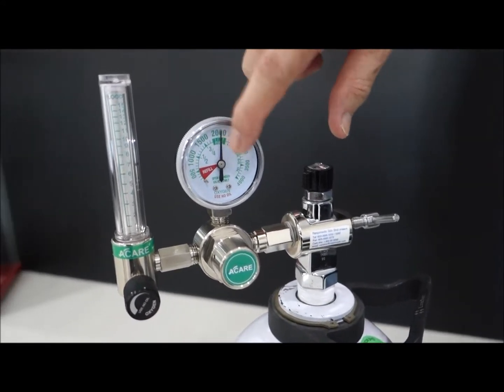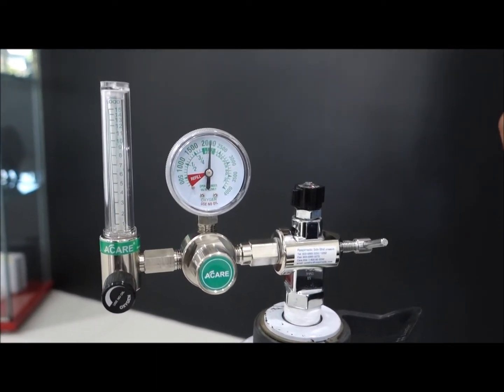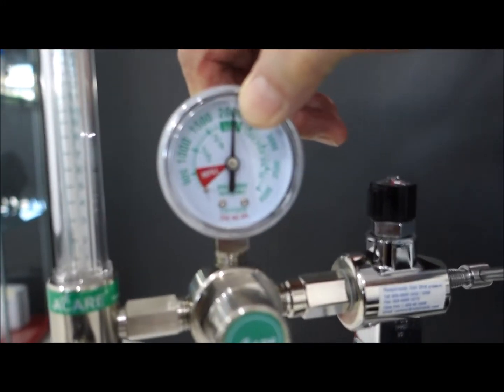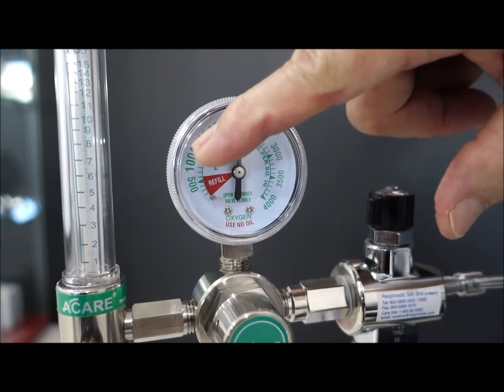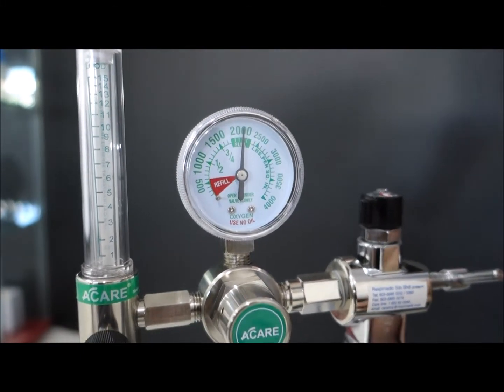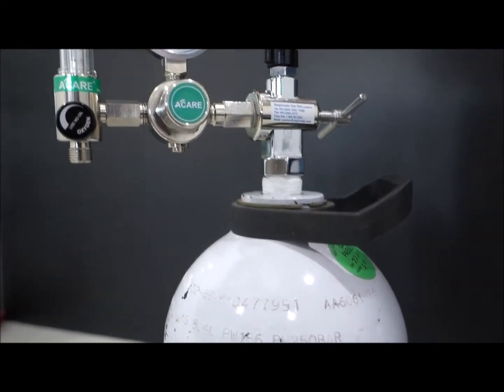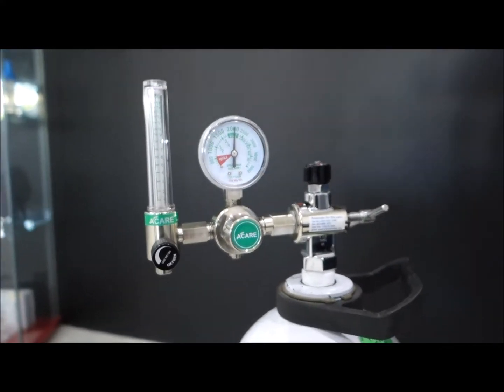For the fully charged cylinder, you should get around about 2,000 PSI. And then of course, as you use the gas in the cylinder, then it will drop proportionally. For the fully charged cylinder, this is a 1.4 liter cylinder, you should get at 2,000 PSI, around about 1,400 liters.